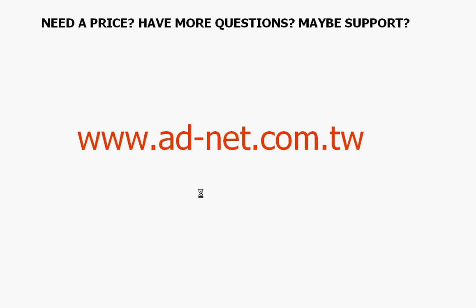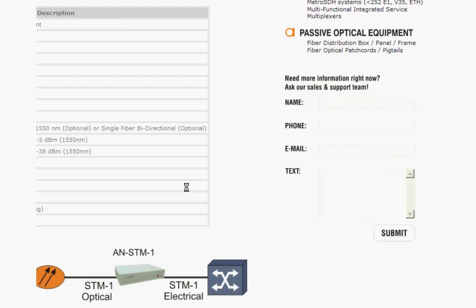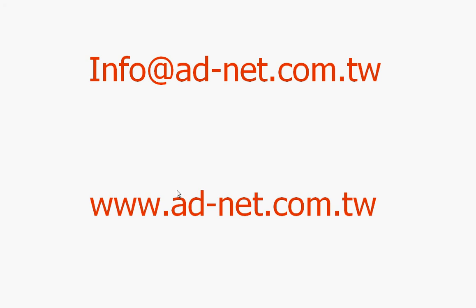If you need more information, you need support or pricing, you can always visit www.adnet.com.taiwan. On the website you can go to any product. You can enter your name, you can enter your phone, you can enter your email, and you say whatever you need. Or you can always write us an email to info at ad-net.com.tw. Thank you for listening.